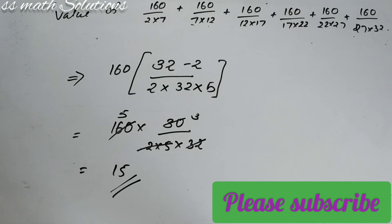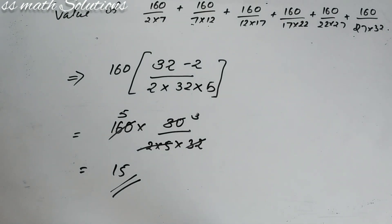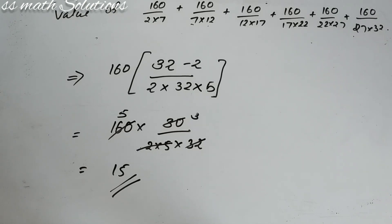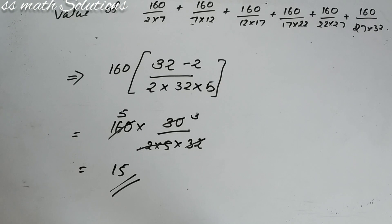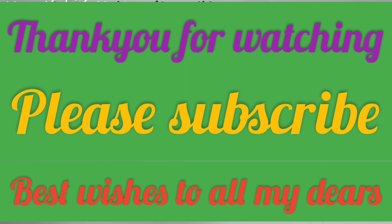The video would go too lengthy to show the basic summation method, but if you need that original explanation, just comment below and I will explain it in the next video. Hope you understood: take the common number outside, then (last pair − first pair) divided by their product times the common difference gives the answer. Thank you for watching. Please subscribe to my channel for future videos.